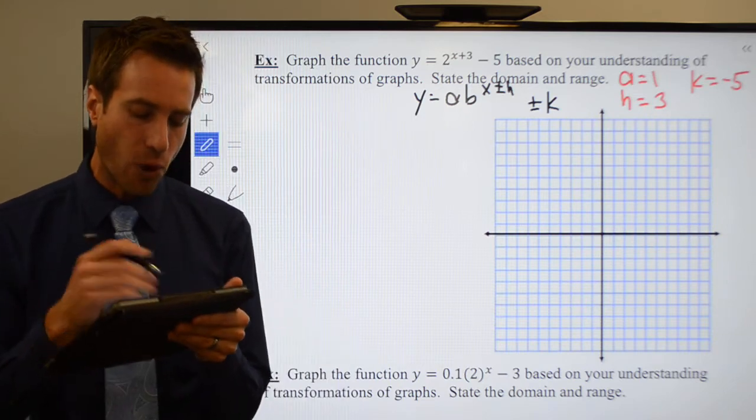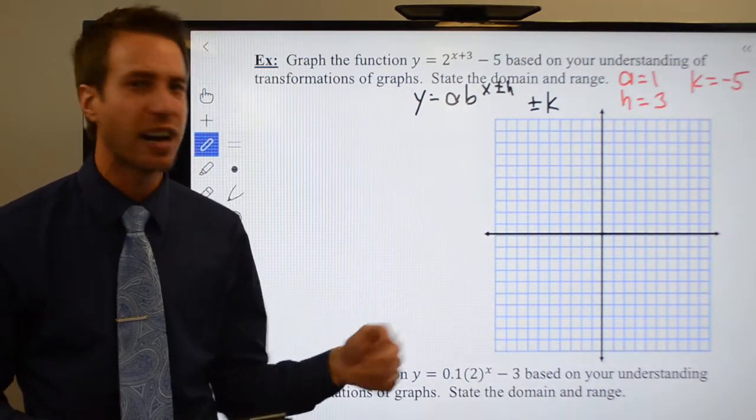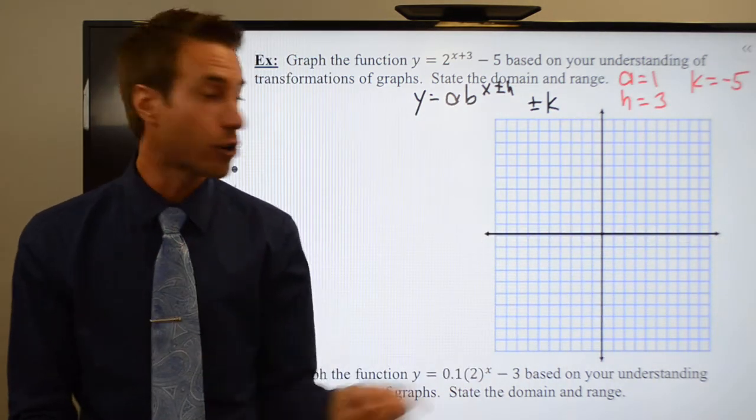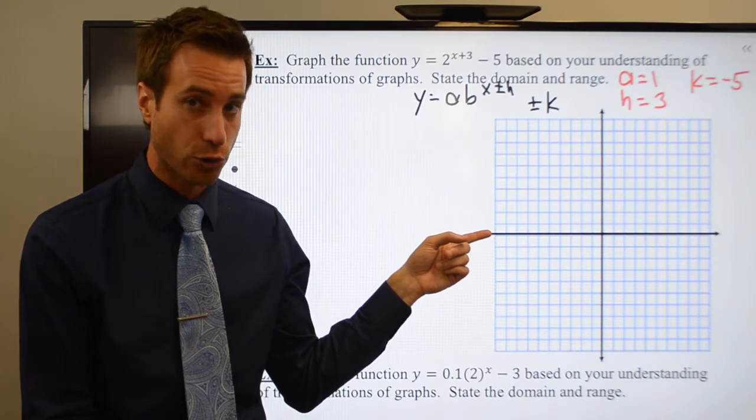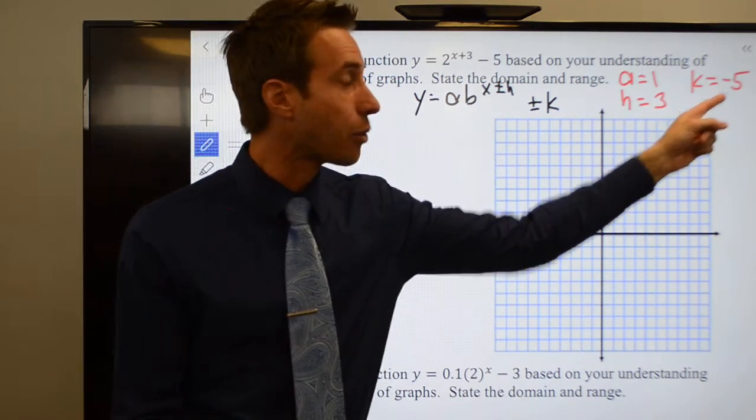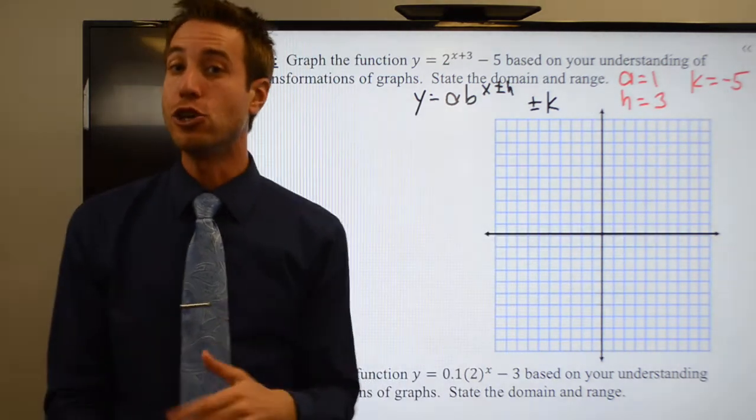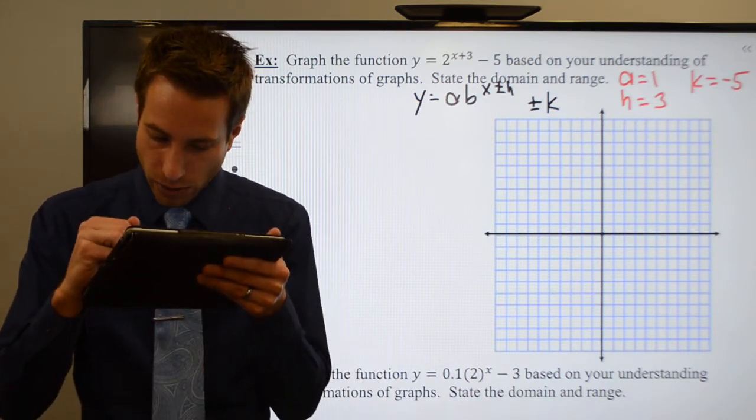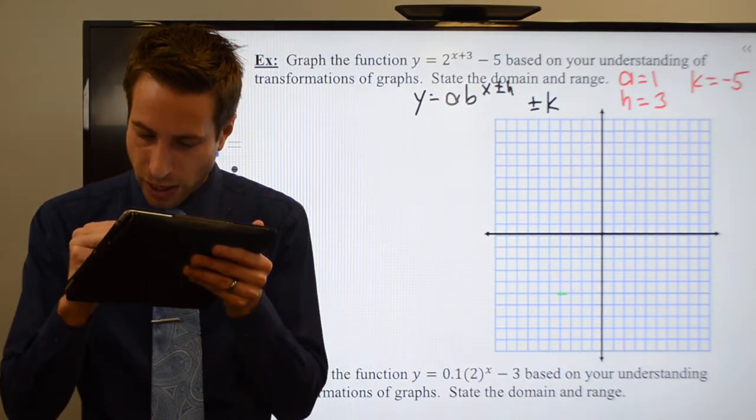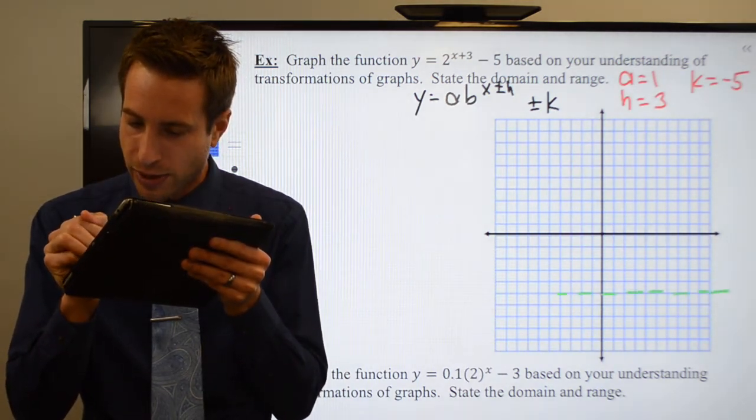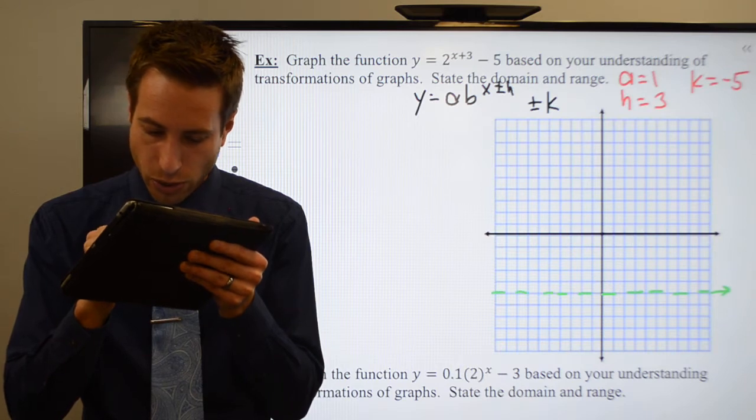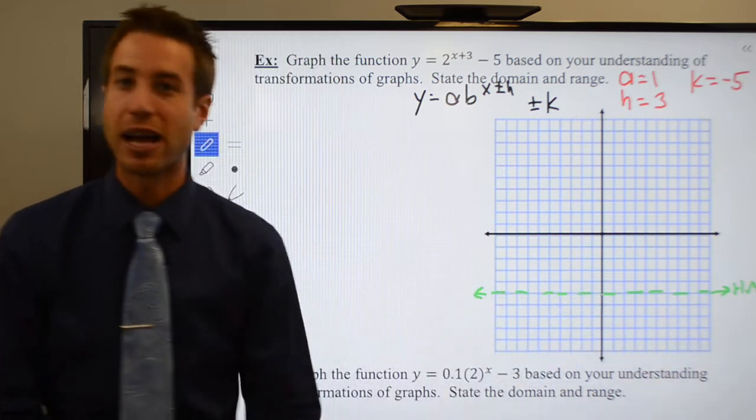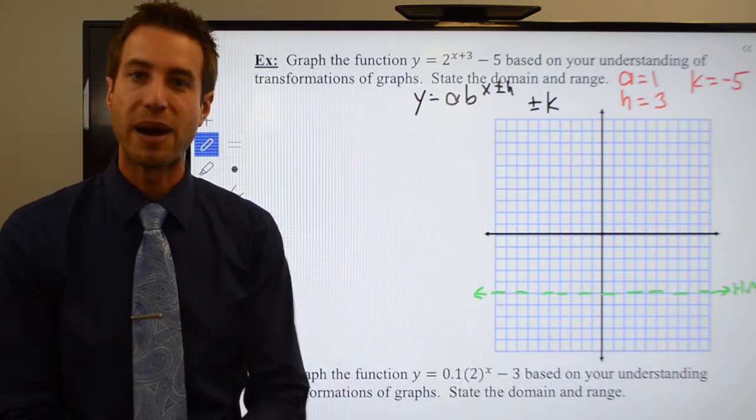Before I even set up my chart, here's what I know. My horizontal asymptote, which is generally the x-axis if there are no transformations, has now been shifted down five units. So my new horizontal asymptote is going to be y equals negative five. I'll put a little dotted line right there. That's going to be the horizontal line that my graph will approach but never touch.